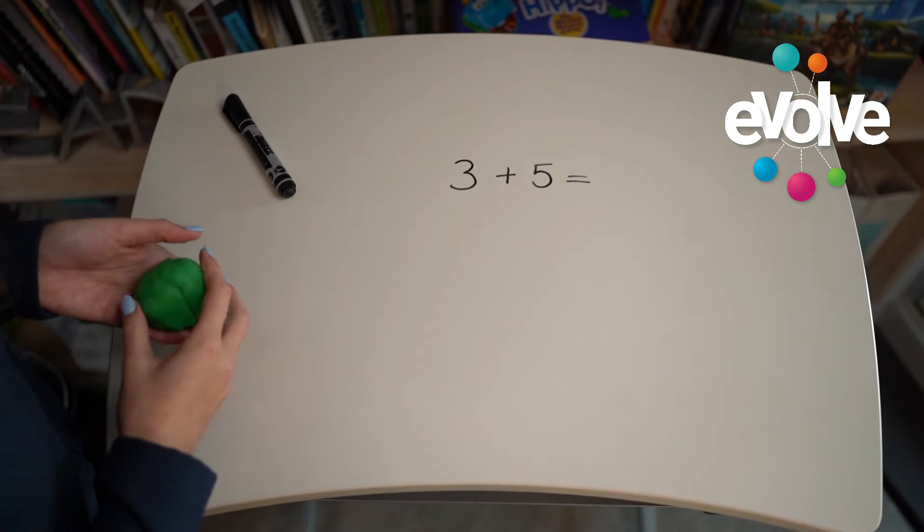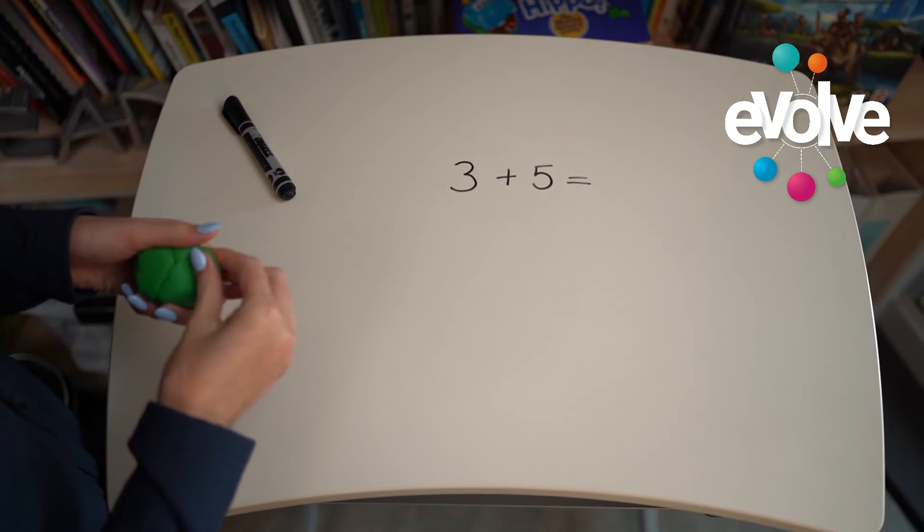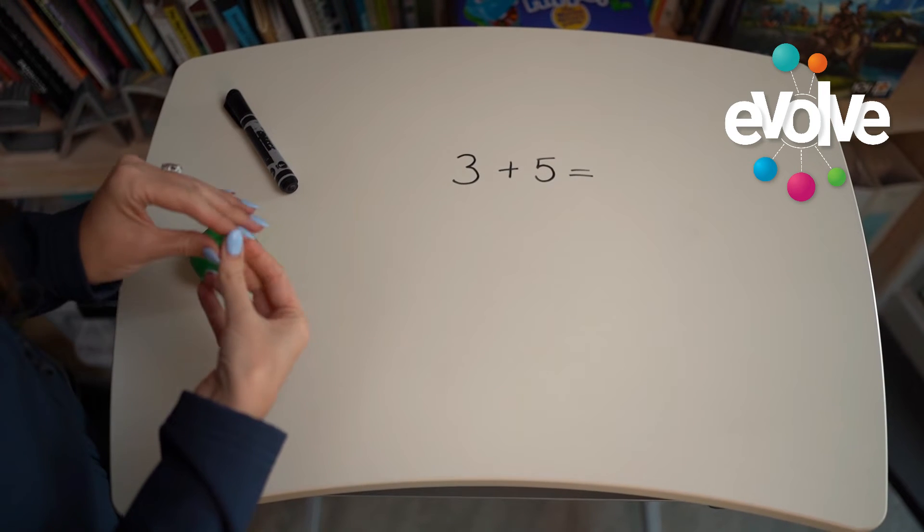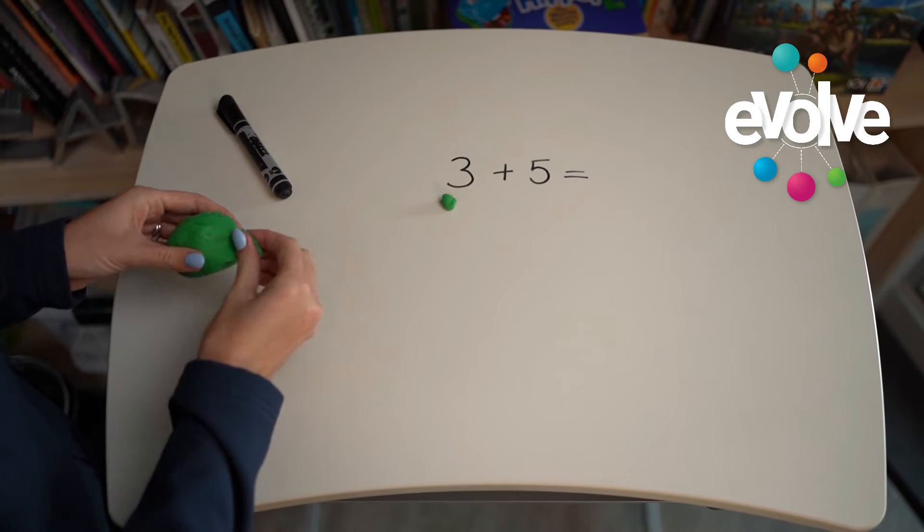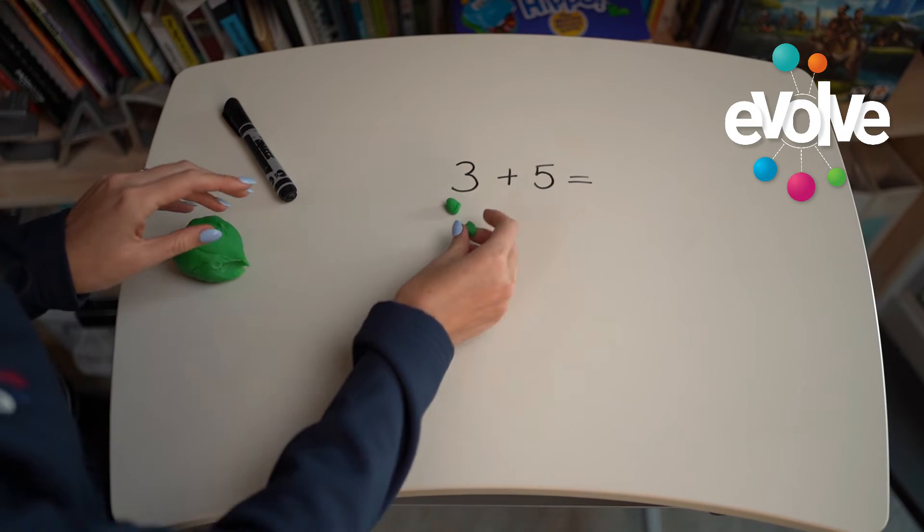Alright, we know that we're starting with our number 3, so we're going to roll out three balls of play-doh. One, two, three.